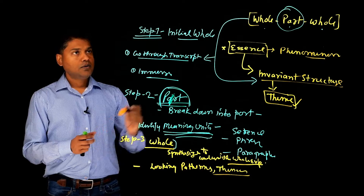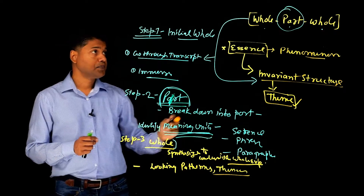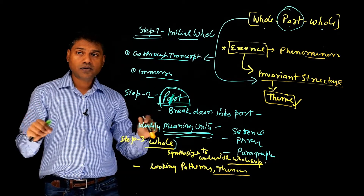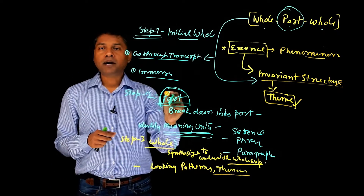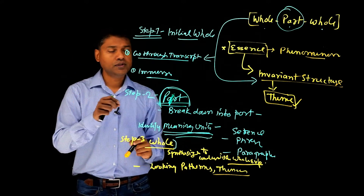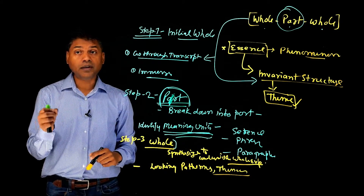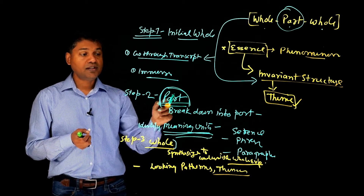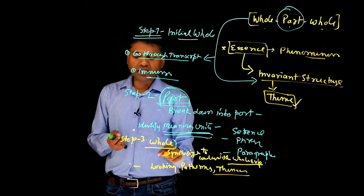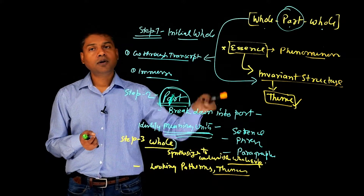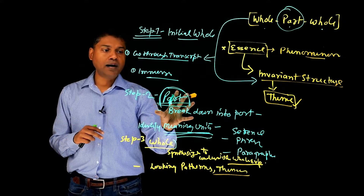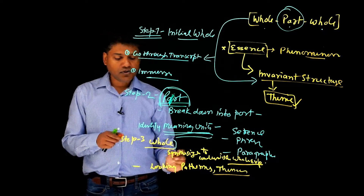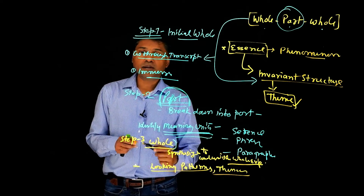So that's step three, and that's what whole-part-whole analysis is. You start with the whole — you read the transcript holistically and understand the meanings holistically. Then you do the part analysis where you look for important phrases, sentences, and paragraphs that really tell you some meanings about the phenomenon. You highlight those, understand the meanings in the part, and then you look at those meanings from a holistic perspective — you contextualize the part meanings in the context of the whole transcript and whole phenomenon, and then you synthesize it, looking for patterns and themes that emerge from the data.